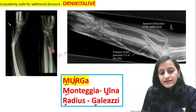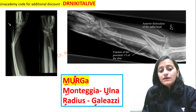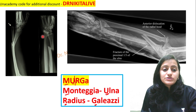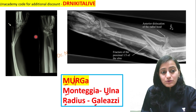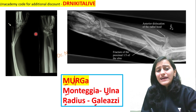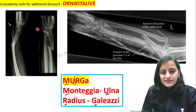Here we see the fracture is of the radius. So this becomes radius is Galeazzi — this is Galeazzi fracture. Why Galeazzi and not Colles' or Smith's? We'll see that as well.